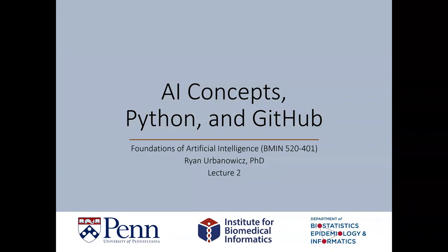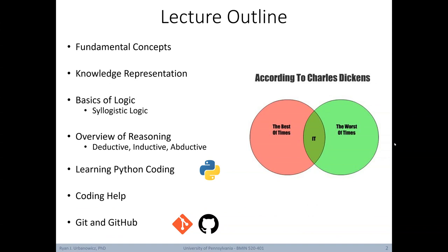Hello and welcome to lecture two of Foundations of Artificial Intelligence. Today we're going to be covering some basic AI concepts, then we'll talk briefly about Python and GitHub. Here's today's lecture outline: first we'll cover fundamental concepts of artificial intelligence, then knowledge representation, then basics of logic with focus on syllogistic logic, then an overview of reasoning differentiating deductive, inductive, and abductive reasoning. Next I'll discuss how to learn Python if you're new to it, how to get coding help, and lastly the basics of installing and using Git and GitHub.